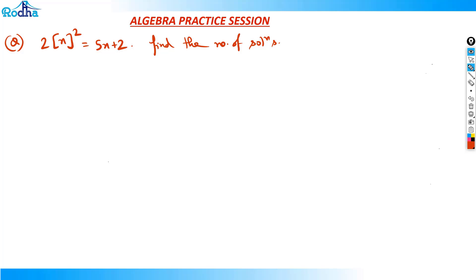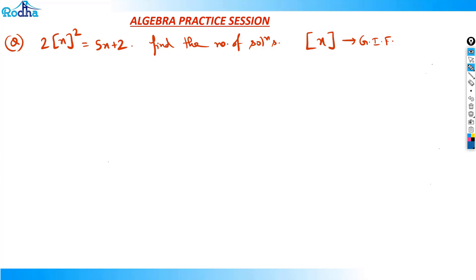So the number of solutions I need to find here. Basically, the greatest integer function of x denotes the greatest integer less than or equal to x. And I already told in the last video what is the meaning of this greatest integer function. Any rational number x is always i plus f, where i is any integer and f is the fractional part that is always between 0 and 1.